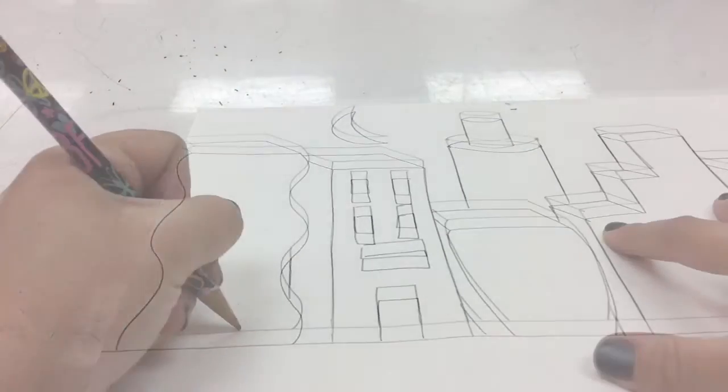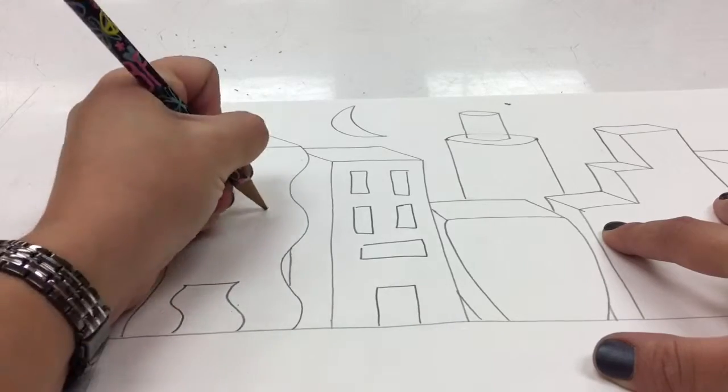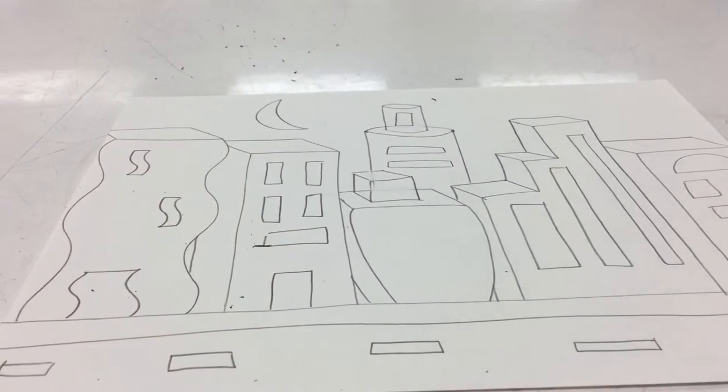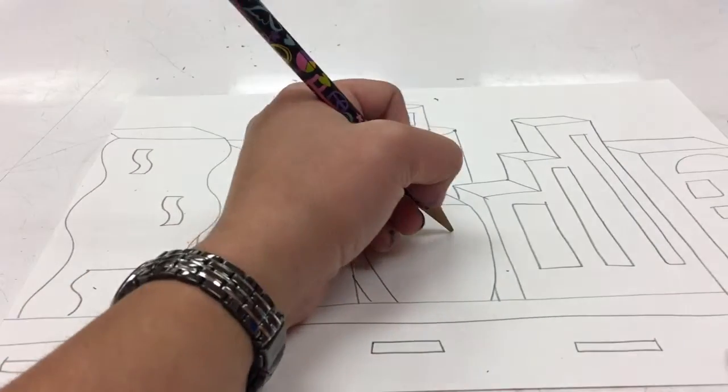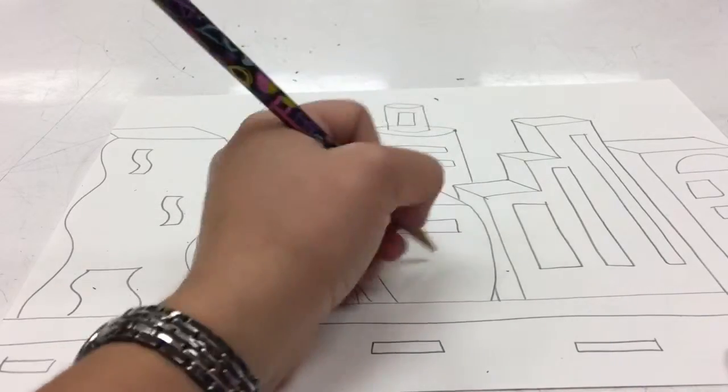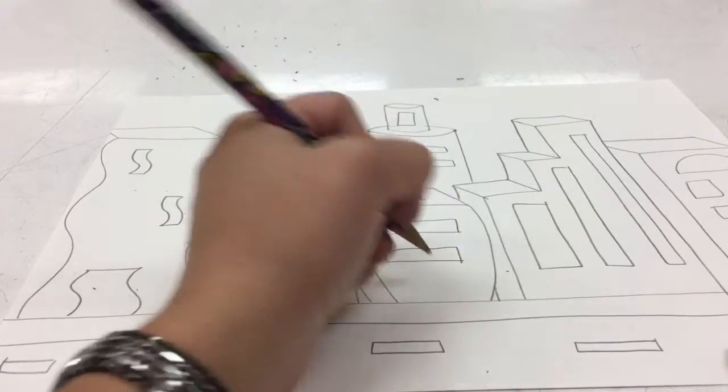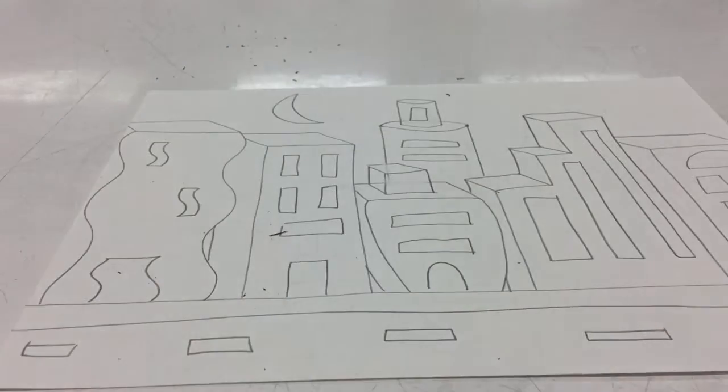Now finish your details. So now that I'm done adding most of the details, whoops, forgot one, to my cityscape, I'm going to go ahead and trace everything in Sharpie for a clean, clear, crisp look.